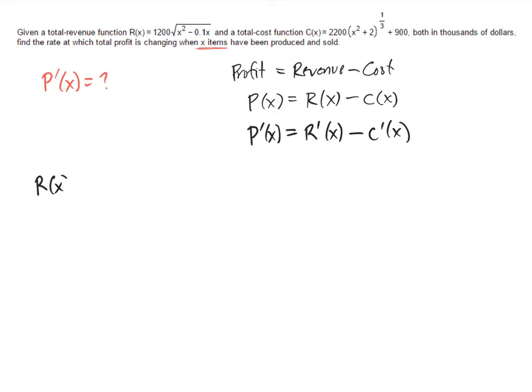So let's do those two problems separately. r of x is 1200 times the square root of x squared minus 0.1x. And c of x is 2200 times x squared plus 2, all raised to the 1/3 power, plus 900.